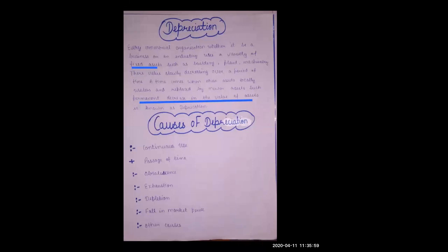The fourth objective is the replacement of assets. When we set aside depreciation, it becomes a provision for depreciation. When an asset becomes obsolete or useless, we need a new asset, and the depreciation provision helps fund that replacement.